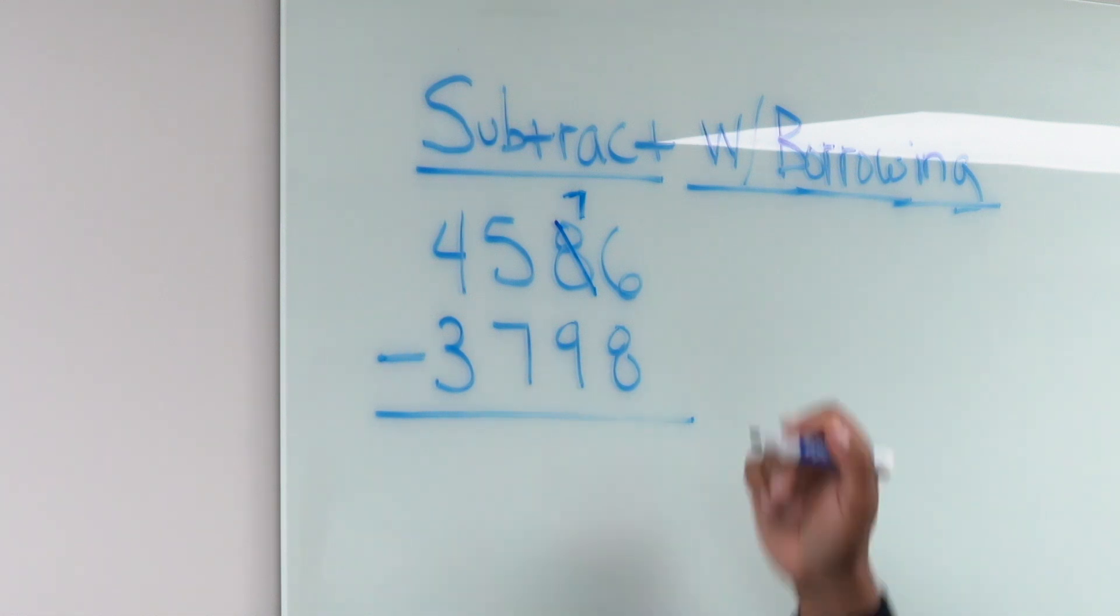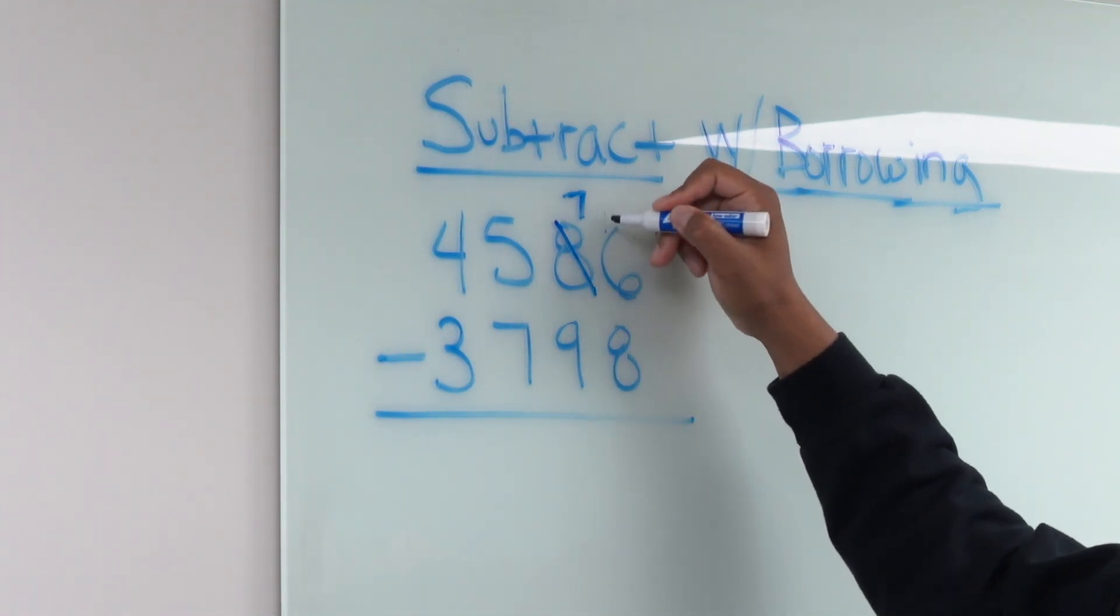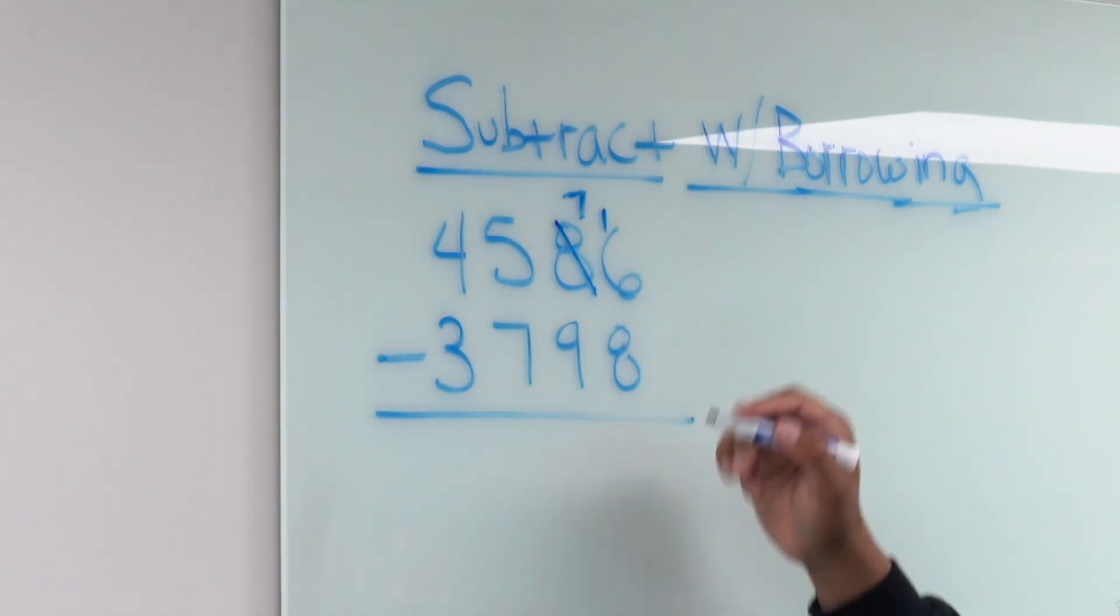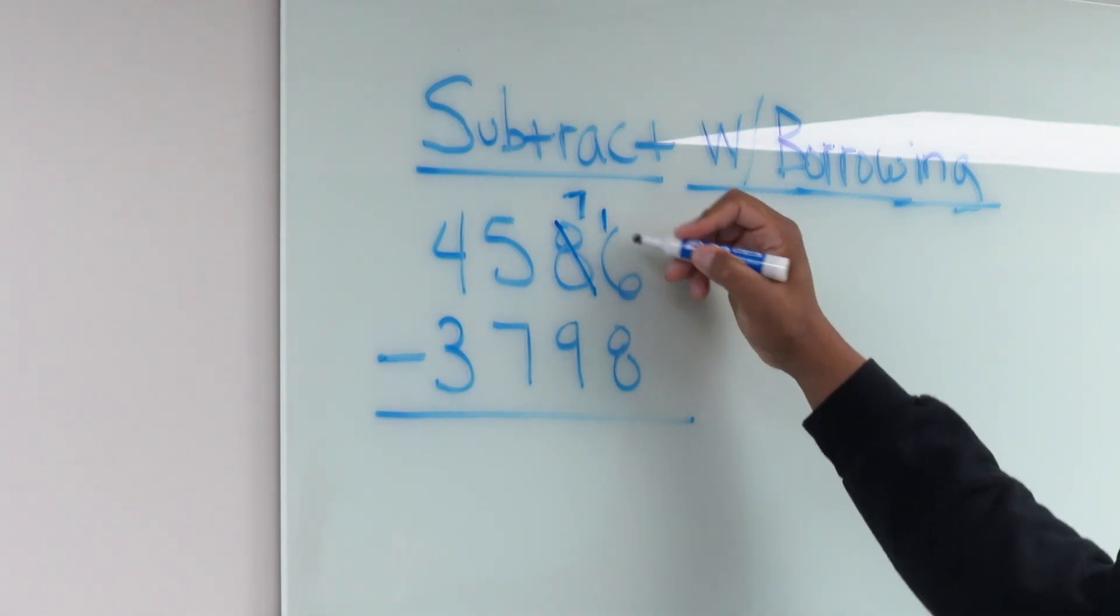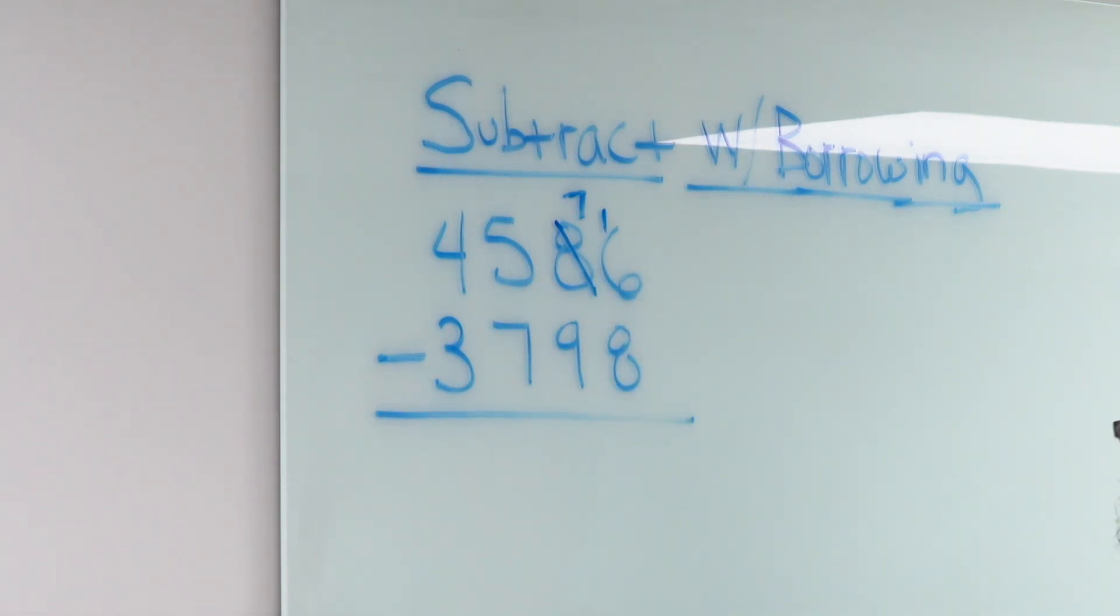So now you have 7 tens and then we take 10 and we put it over here with the ones. So then we think okay well what's 10 plus 6? 16. So that's why you write the 1 right here and why this becomes a 16. So then we can subtract and do 16 minus 8. Make sure we know our subtraction facts by heart. 16 minus 8 is 8.